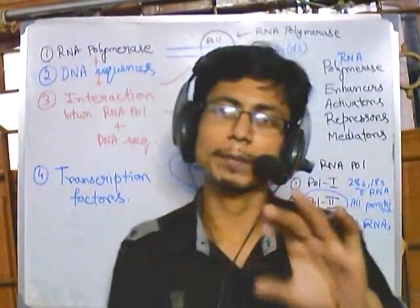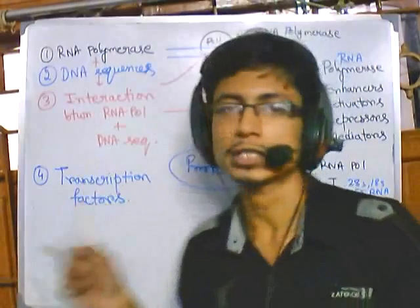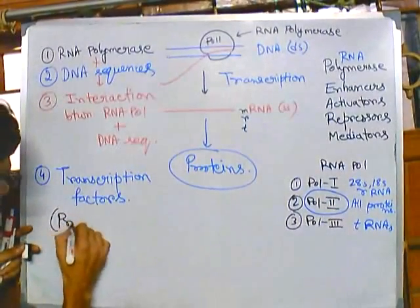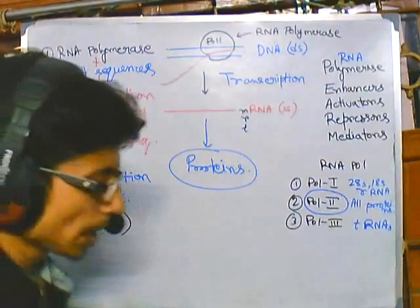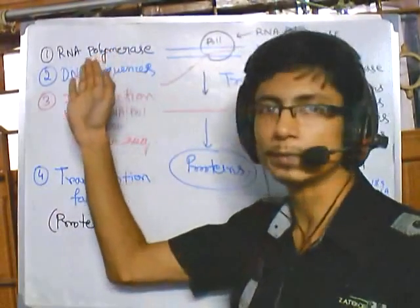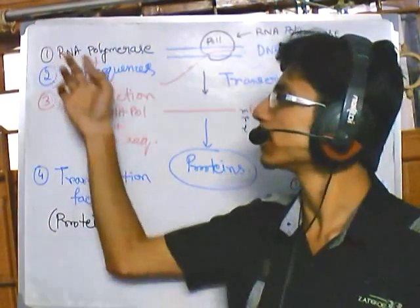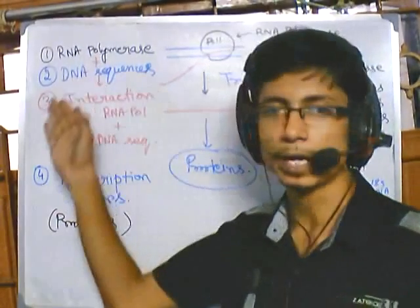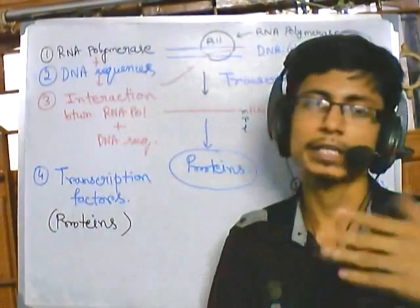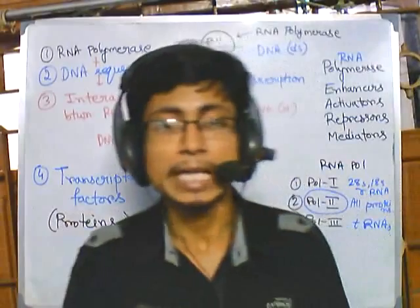These transcription factors are protein molecules that act as bridges between the RNA polymerase and DNA sequence, helping to establish either a positive or negative interaction between them. If the interaction is positive, the effect is positive; if the interaction is negative, the effect is negative — that is how the whole process works.